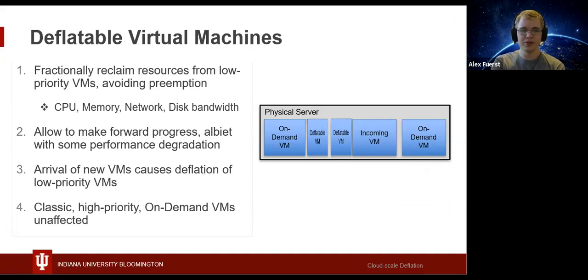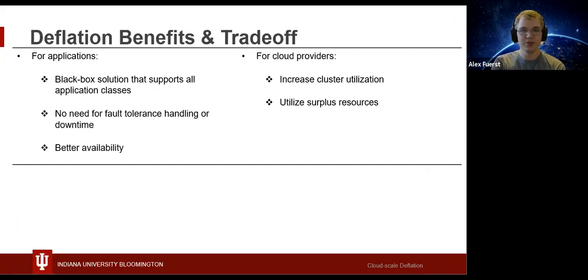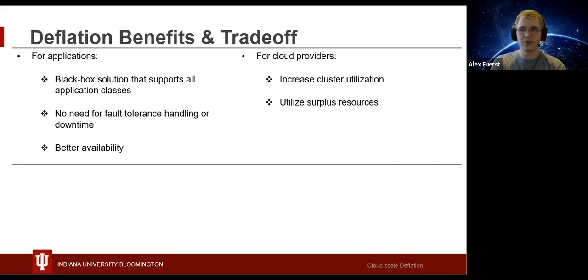Traditional on-demand VMs are not affected by the deflation of their neighbors. Deflation comes with significant benefits all around, but some noteworthy trade-offs. Its black box solution supports all application classes, meaning applications don't need to have expensive fault tolerance code or handle downtime scenarios that are necessary with current transient VMs. With these benefits come better availability, allowing interactive applications to consider running on transient resources.